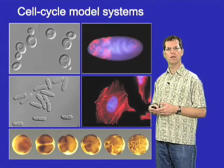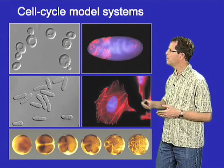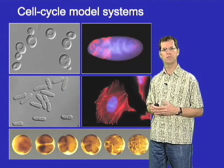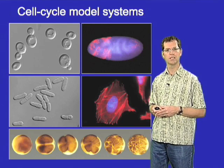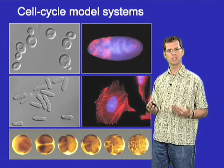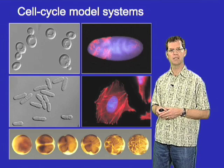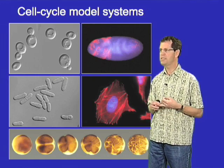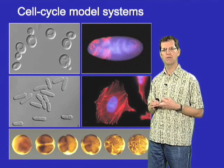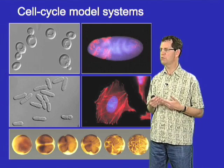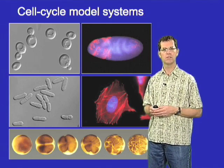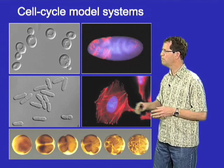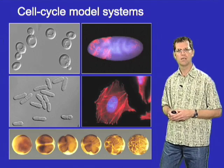This slide illustrates a few of the really important model organism systems for studies of cell cycle control. In the upper left is the budding yeast Saccharomyces cerevisiae and below that the fission yeast Schizosaccharomyces pombe. These two yeasts have been extremely important model systems for many reasons: their regulatory mechanisms for cell cycle control are very similar to those found in human cells, they have short generation times, completely sequenced genomes, and it's possible to do a wide range of genetic manipulations in these organisms.